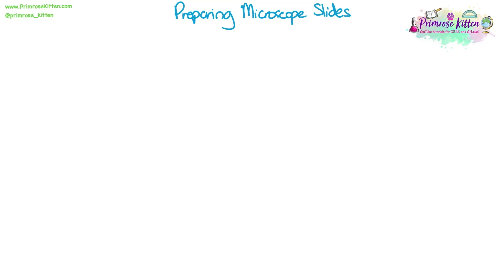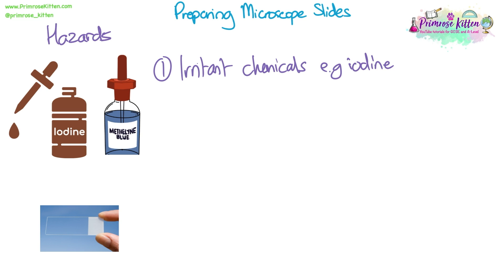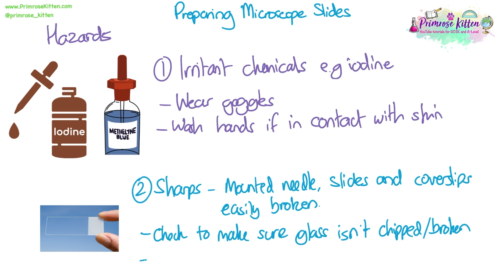Now let's look at preparing microscope slides. We'll use onion tissue as a basic example, but this method is similar for other tissues. First, let's go through the hazards: we're using stains such as iodine — these are irritant or harmful chemicals, so we must wear goggles at all times and wash hands if any substance gets on your skin. Some equipment is sharp, such as mounted needles. The slides and cover slips are glass and can be easily broken or have chipped edges, so check all glass before use and keep it away from the edge of the bench.